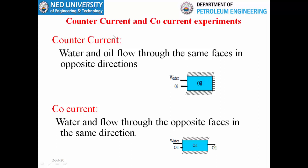Counter-current means that water and oil flow through the same face in opposite directions. For example, water is being imbibed into the matrix and oil is being released from the matrix through the same face of the block in opposite directions — this is called the counter-current mechanism. In co-current flow, water is imbibed in one direction and oil is released from the matrix from the other face in the same direction. When water and oil flow through opposite faces in the same direction, that type of flow is called co-current.